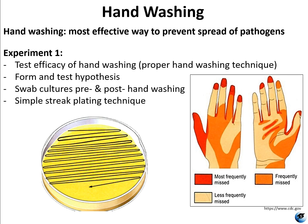For experiment one, we're going to test the efficacy of your handwashing technique. The proper technique will be demonstrated using a swab culture. You're going to swab your hands before you wash them and put that on a nutrient agar plate, then swab them again after you wash them and put that on another nutrient agar plate. Then we will incubate the plates and see what kind of bacteria are still there after you washed your hands — whether it's the same bacteria as before or something different.